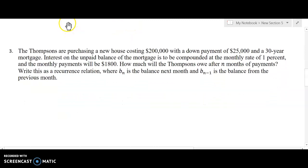Now in some cases, we have information leading to how we get the next term and we have to just write that function. So the Thompsons are purchasing a new house costing $200,000 with a down payment of $25,000 and a 30-year mortgage. Interest on the unpaid balance of the mortgage is to be compounded at the monthly rate of 1% and the monthly payments will be $1,800. How much will the Thompsons owe after N months of payments? This is a recurrence relation where BN is the balance next month and BN minus 1 is the balance from the previous month.